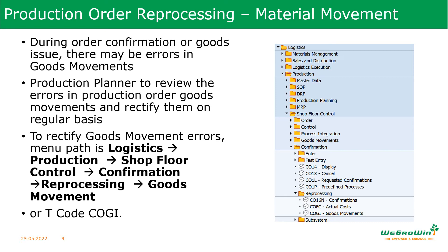In configuration, we can stop the confirmation when there is an error. But some companies keep it as just a warning message, and shop floor workers ignore all these warning messages and keep confirming. When this happens, there will be a lot of errors in the system — wrong inventory, stock not properly showing. A production planner has to regularly review these kinds of errors. When I was working, I used to tell my planners to check this transaction on a daily basis and correct any errors from the previous day. Because of this discipline, we kept a very clean SAP system.